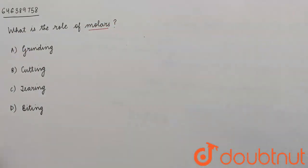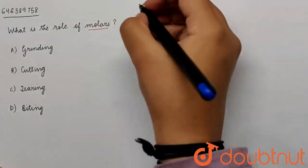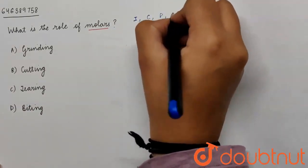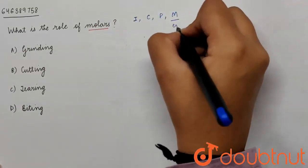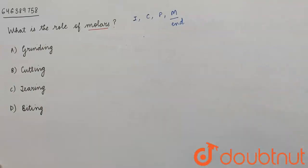We know that we have four types of teeth in human beings. We have incisors, canines, premolars and molars. Molars are at the end of your mouth.